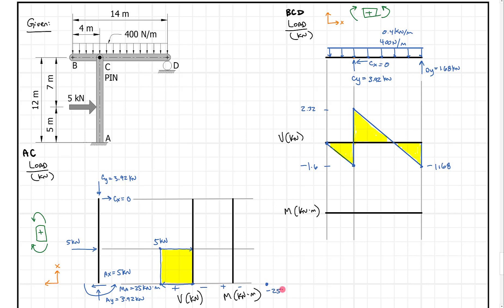We start the moment diagram at minus 25 for member AC. From there, we climb back toward zero. Area 1 is 5 kilonewtons times 5 meters = 25 kilonewton-meters. Starting at minus 25, we add 25 and come straight back to 0. After that point, there's no shear remaining on this member, so the moment has zero slope and stays constant. That completes the moment diagram for member AC.